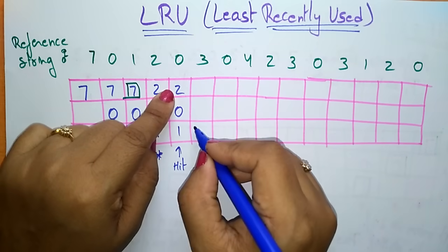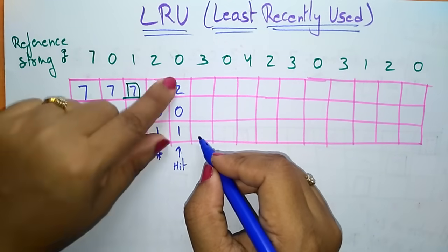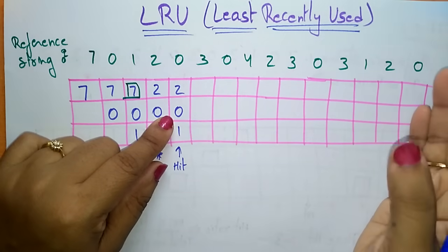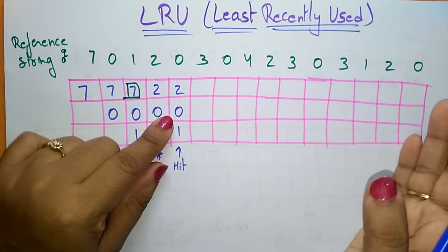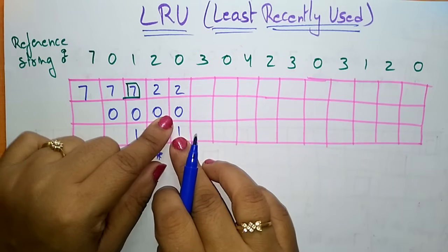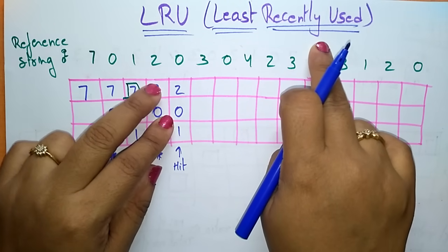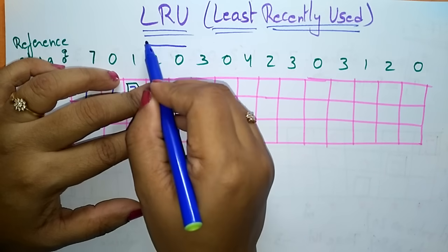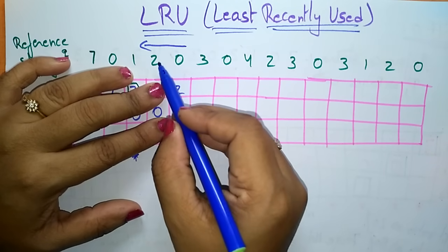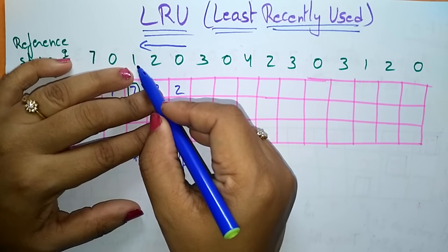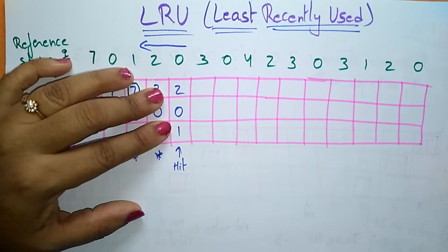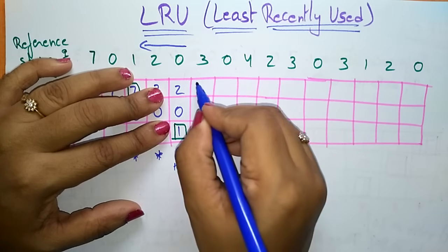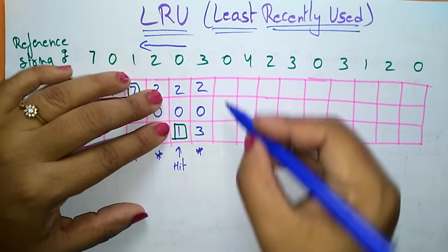Now I have to place 3. Page 3 is not present in the RAM, so it is a page fault. I bring page 3 from the disk. Now where to place it — follow the LRU algorithm. From frames 2, 0, 1: 0 is most recently used, next is 2, and 1 is the least recently used. So I remove 1 and place 3, giving frames: 2, 0, 3. This is also a page fault.